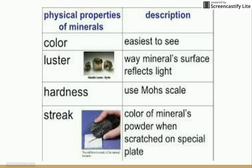This picture shows descriptions of key properties: color is one of the easiest to see; luster is the shininess or the way the mineral's surface reflects light; hardness uses the Mohs scale; and the color of a mineral's powder when scratched on a special streak plate is how we figure out what mineral we are dealing with.